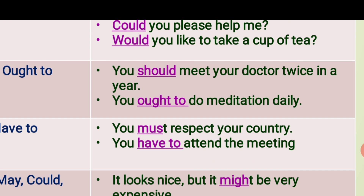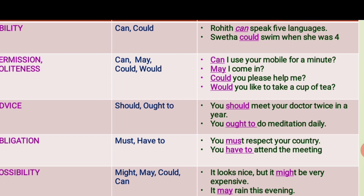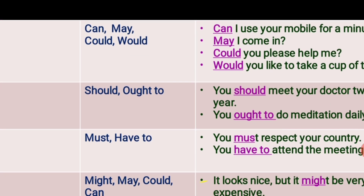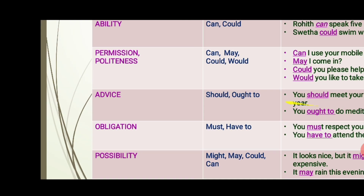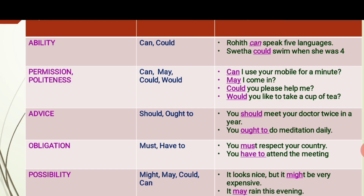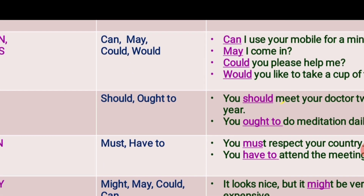The next type is obligation, expressed by 'must' and 'have to'. Obligation means it is our duty. Example: You must respect your country — that is an obligation. Another example: You have to attend the meeting — also an obligation. So with 'must' and 'have to' you can express obligation.